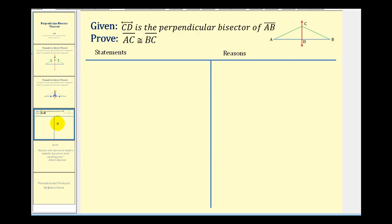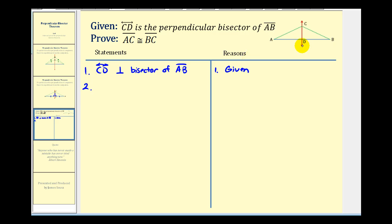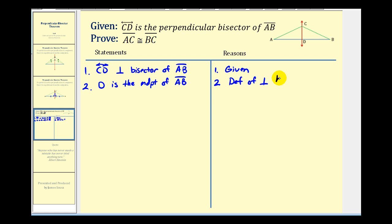Let's go ahead and write this up. We're given line CD as a perpendicular bisector of segment AB, and we want to prove that segment AC is congruent to segment BC. We start by stating the given. Step two: we know that D is the midpoint of segment AB — this is by definition of the perpendicular bisector. And since D is the midpoint, we know that segment AD is congruent to segment BD.